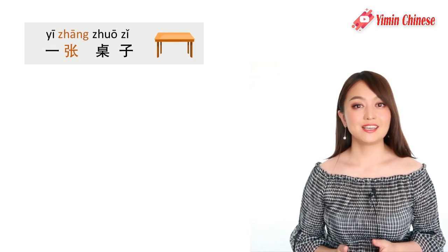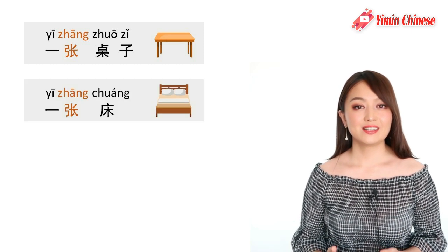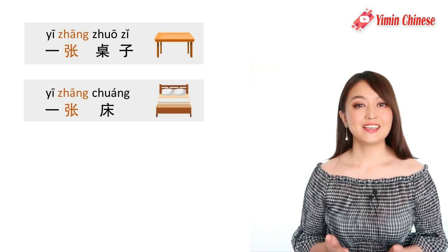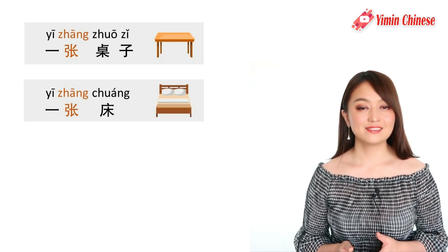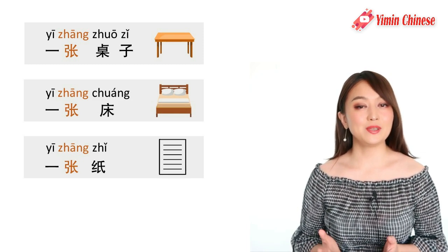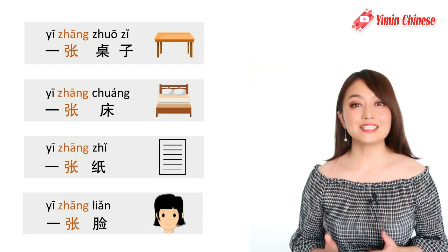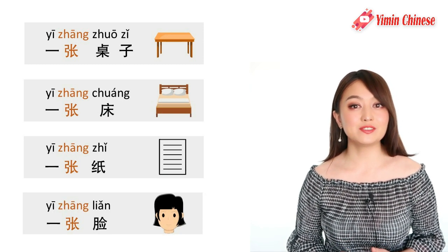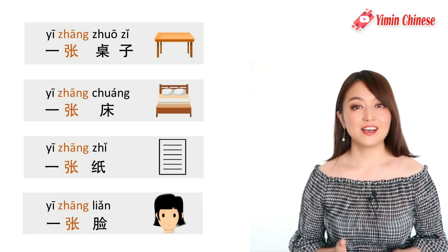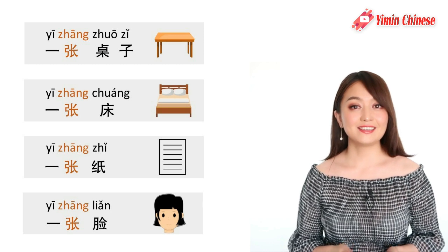一张桌子, a table or a desk. 一张床, a bed. 一张纸, a piece of paper. Did you know that 张 is also a measure word for face? It's 一张脸, a face.